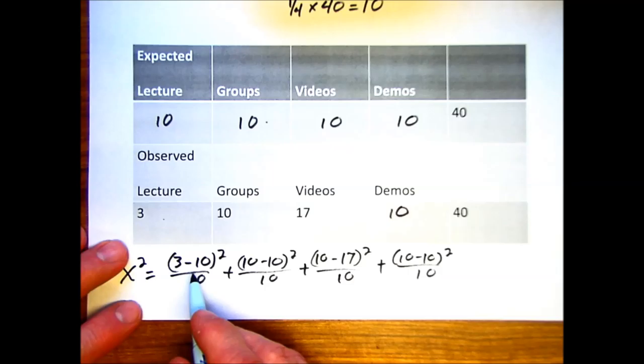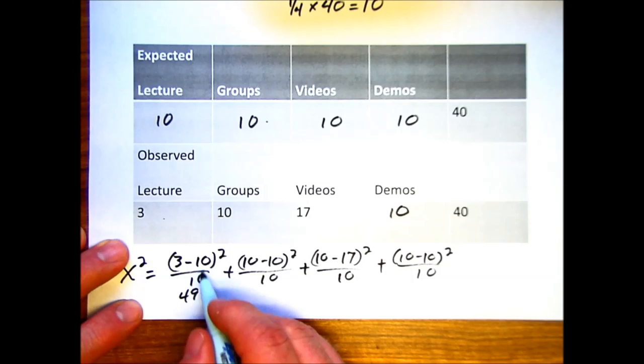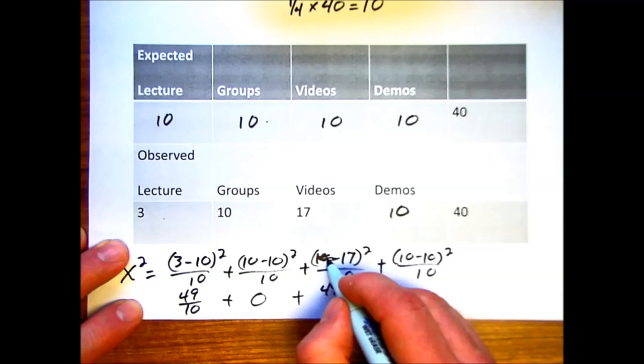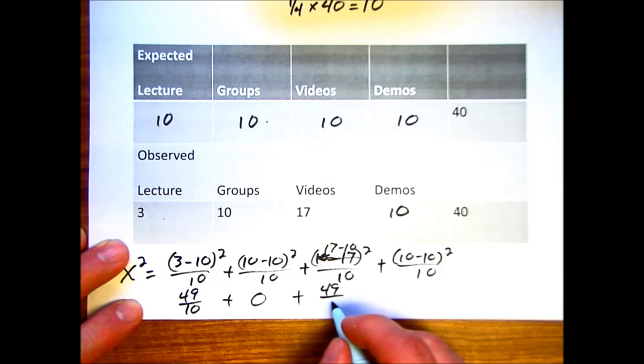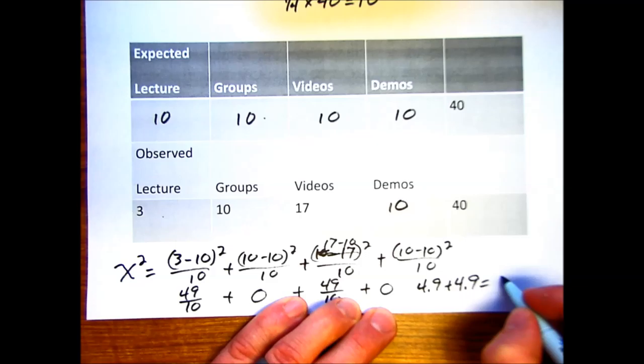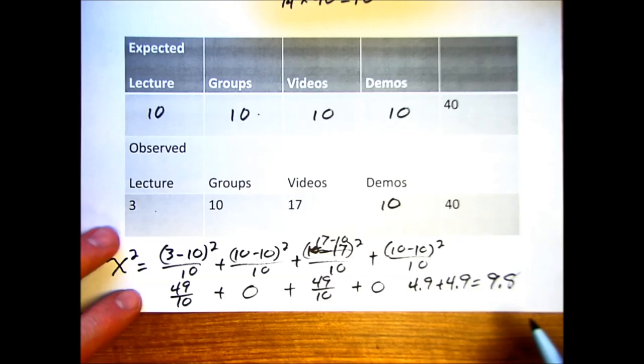So for this first one, we've got forty-nine, right, because it would be negative seven squared, forty-nine, divided by ten. We've got zero here. We've got the same thing here. By the way, I apologize, that should have been seventeen minus ten, hope you caught my error. Gives us forty-nine squared, divided by ten, plus zero. So we've got four point nine, plus four point nine. Our chi-square equals nine point eight.